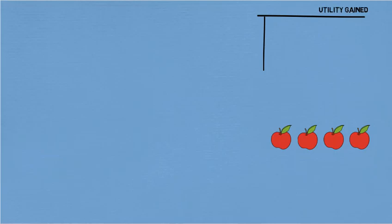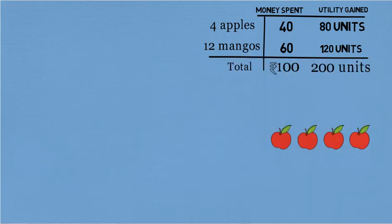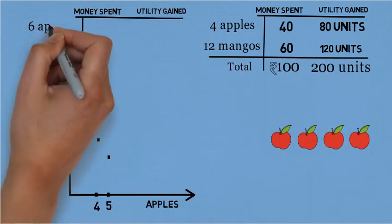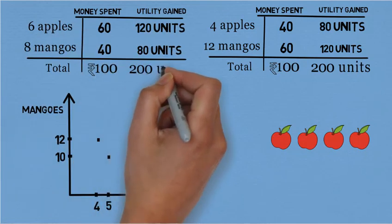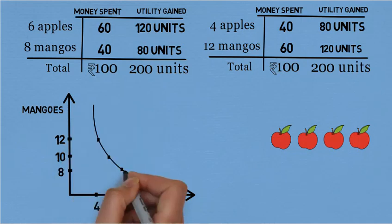But wait — what if you go to the market and find out that there are only 4 apples left? Not to worry. You can buy 4 apples and 12 mangoes. This way again, you'll be spending Rs.100 and gaining 200 units of utility. You can have many combinations like this — you can buy 6 apples and 8 mangoes and still gain 200 units of utility. If you join these points, you'll see the point.